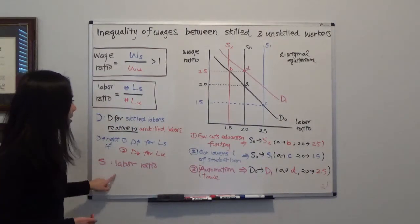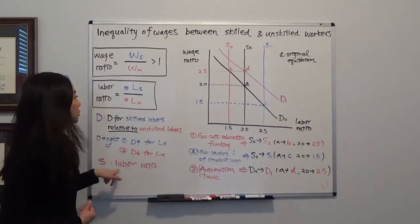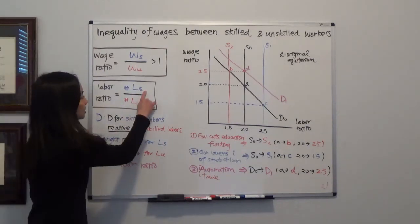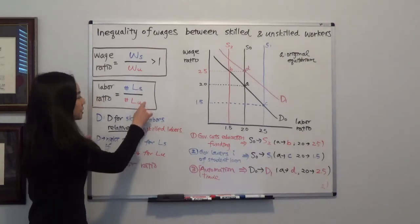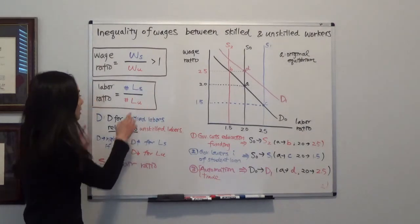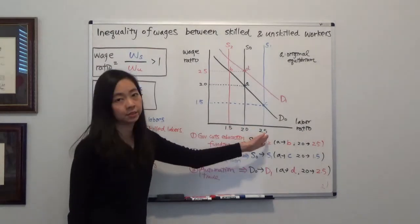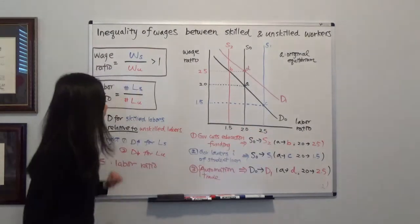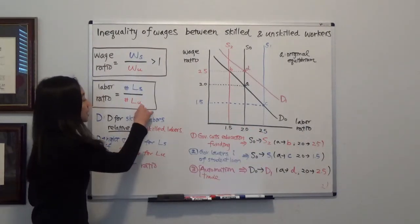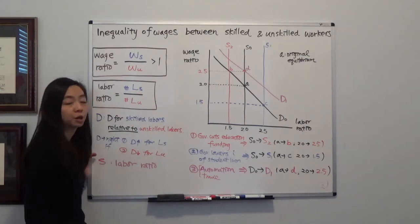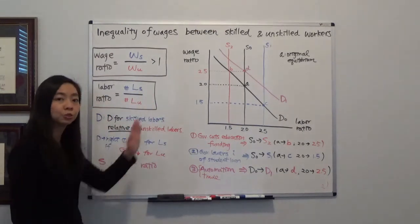Our supply curve is just the labor ratio. Anything that increases the number of skilled workers or reduces the number of unskilled workers will cause the labor ratio to increase. Anything that increases the number of unskilled workers and decreases the number of skilled workers will shift the supply curve to the left.